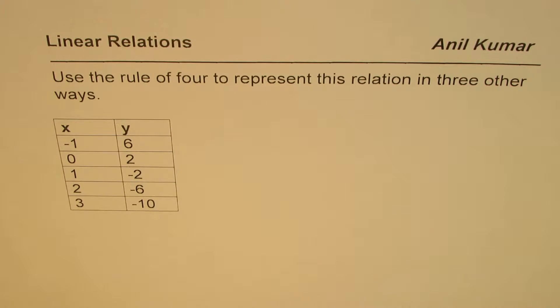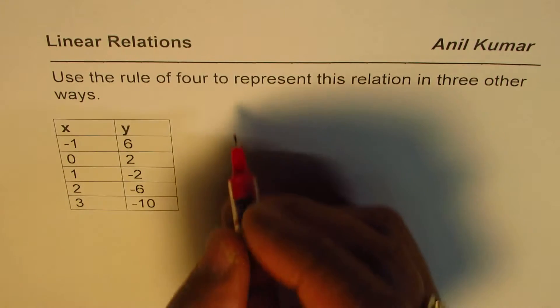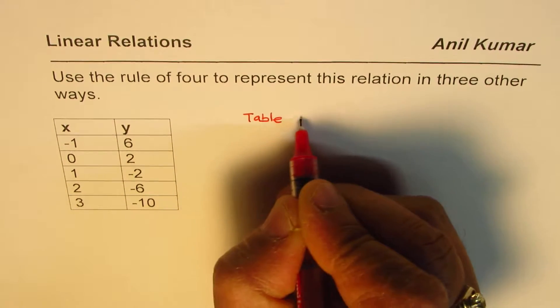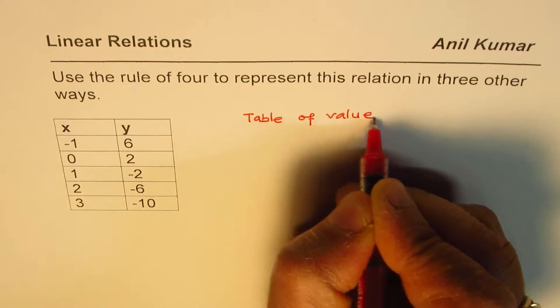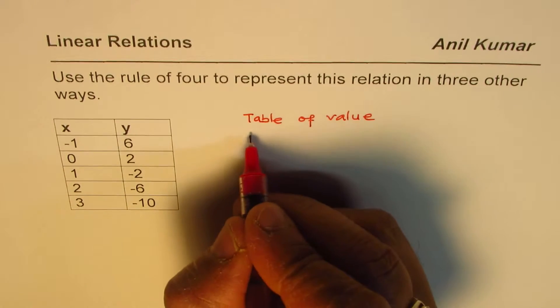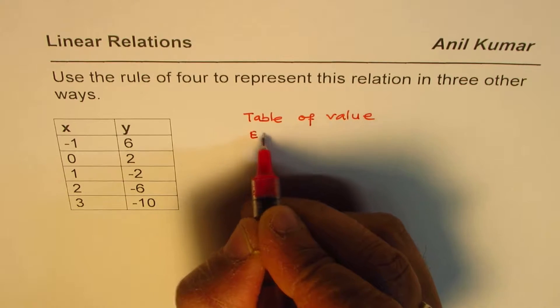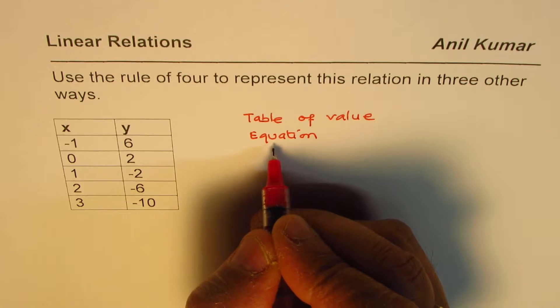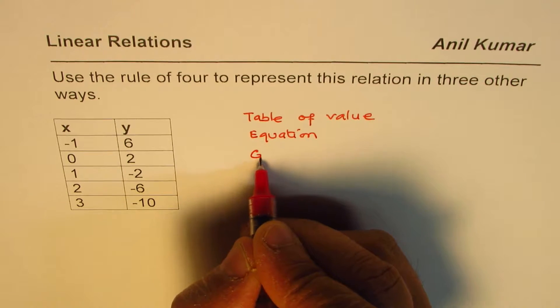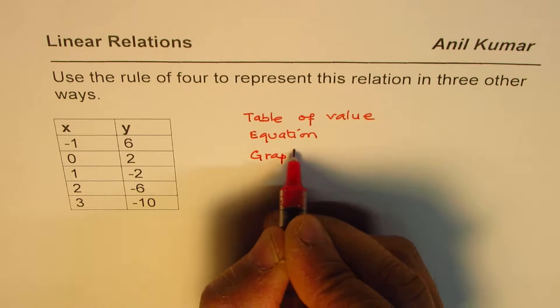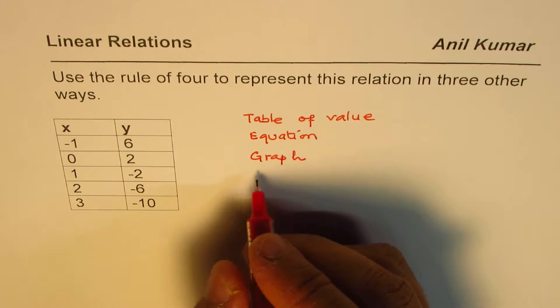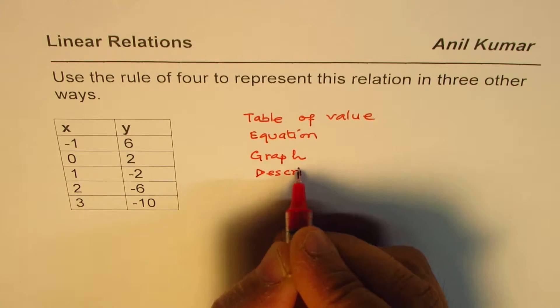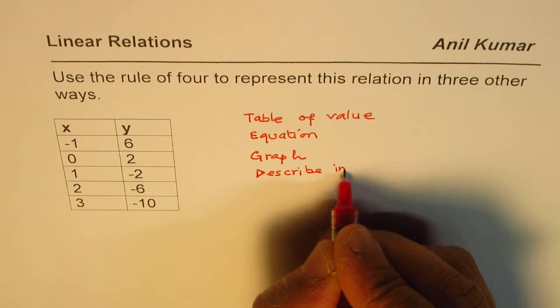What are these four different ways? One of the ways given to you, that is a table of values. We have table of values. Now, from the table of values, you can always find an equation to represent the situation. So, that becomes the second way. And third way is, you can graph them. And the fourth way is, you can describe in words. So, let me write describe in words.